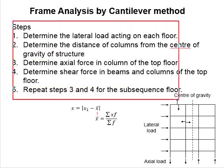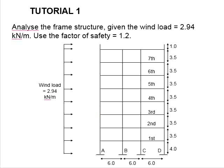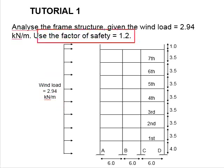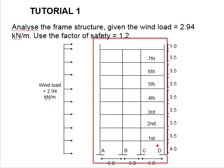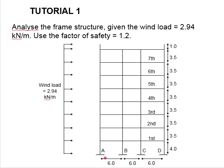To better understand the calculation steps, let us look into an example. A seven-story building is subjected to a wind load of 2.94 kN per meter height. Use a factor of safety equal to 1.2. Determine the axial force, shear force, and moment acting on the beams and columns at each floor. The floor plan is the same throughout, with four continuous columns spaced at 6 meters each.